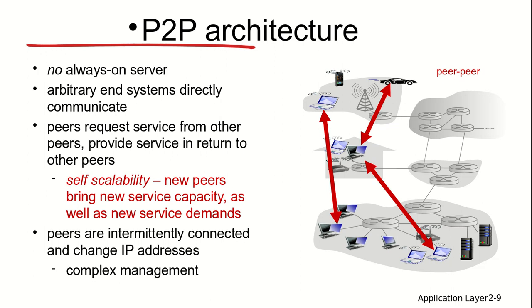There are scenarios where adding more peers can limit overall throughput. Peers are intermittently connected and can change their IP addresses. If two peers are communicating and one changes its IP address, it becomes an issue because you won't know where to send or receive information from. Management is slightly more complex than in client-server architecture.